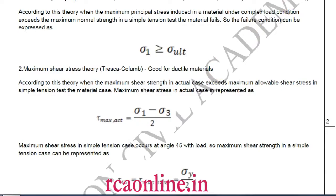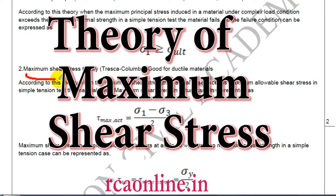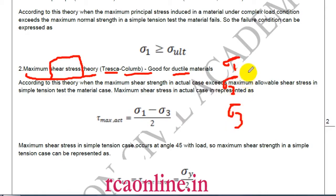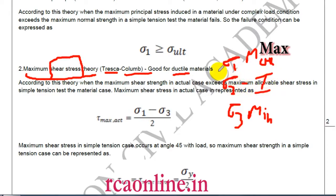Now coming to the second theory, which is the most important for numericals — it is the Maximum Shear Stress theory. As the name suggests, it involves shear stress. It was given by Tresca and Coulomb and is good for ductile material. In complex loading we get sigma one, sigma two, and sigma three.